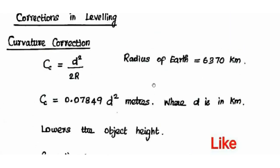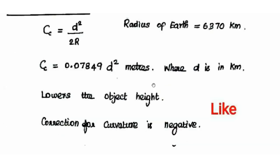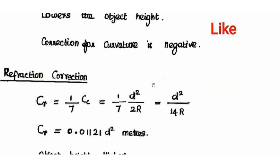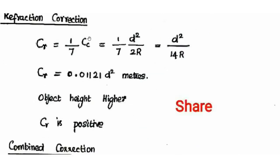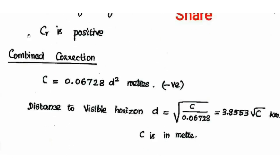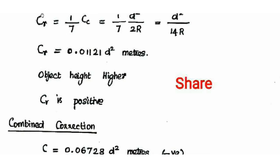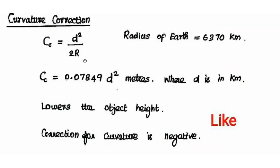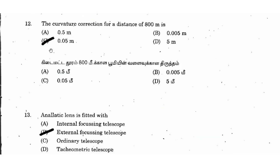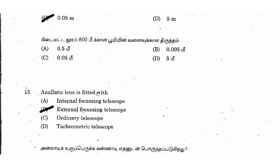That is an important question from the MCQ point of view. In the second part of the question discussion video, we will solve the problem. Substituting 0.07849 × d² gives the answer 0.05 m. The right answer is option C: 0.05 m.